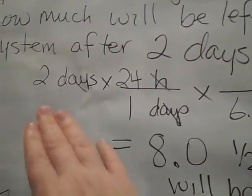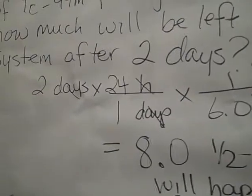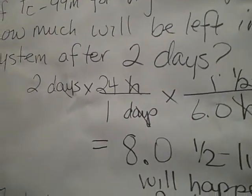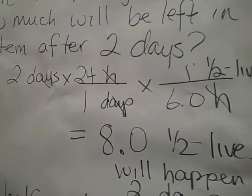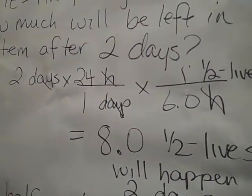Now that could be a bone of contention with some instructors. They might say that two days, it wasn't specified if it was 2.0, 2.5, so they may insist that it just be eight half-lives, and so our final answer could only have one significant figure.